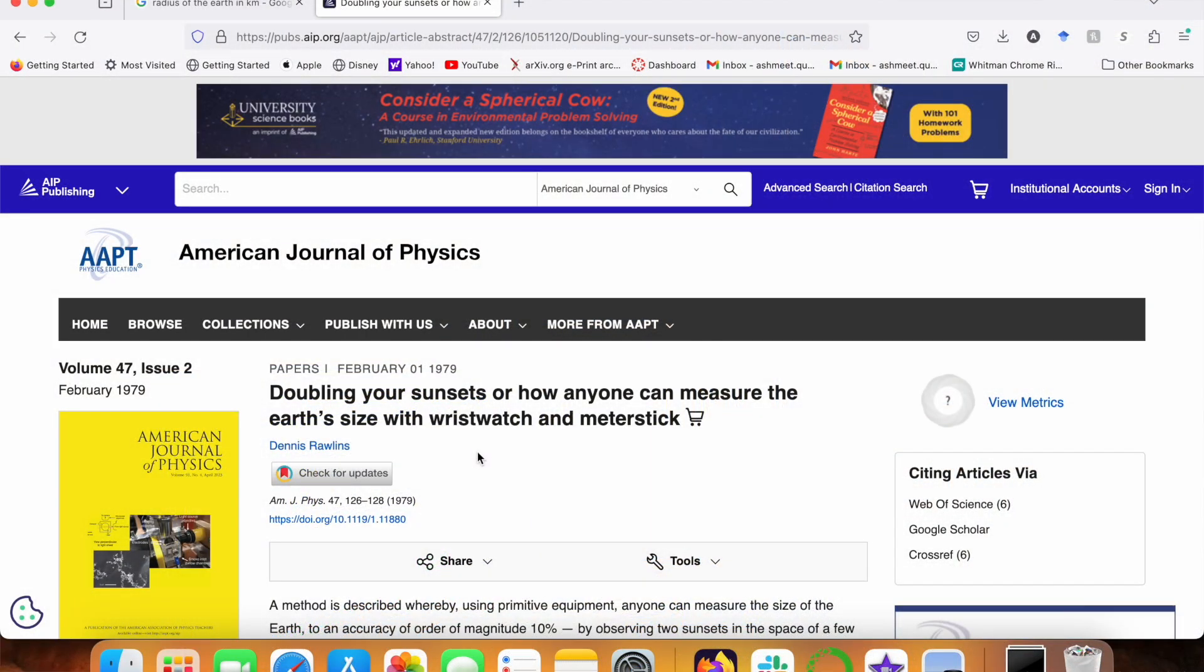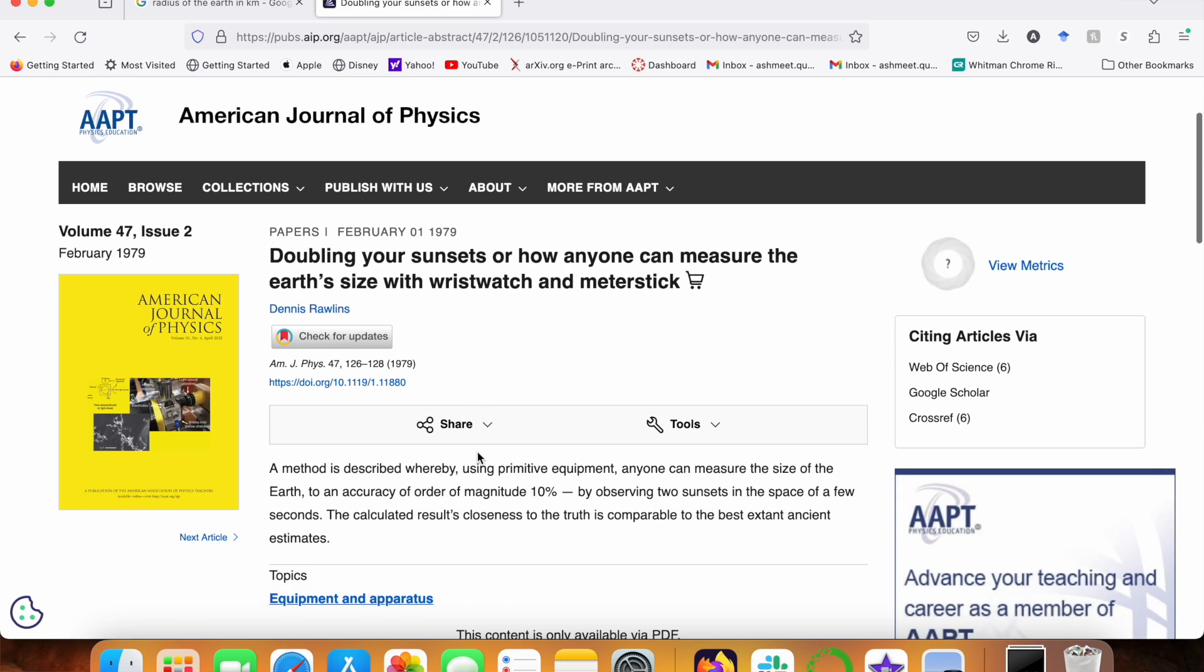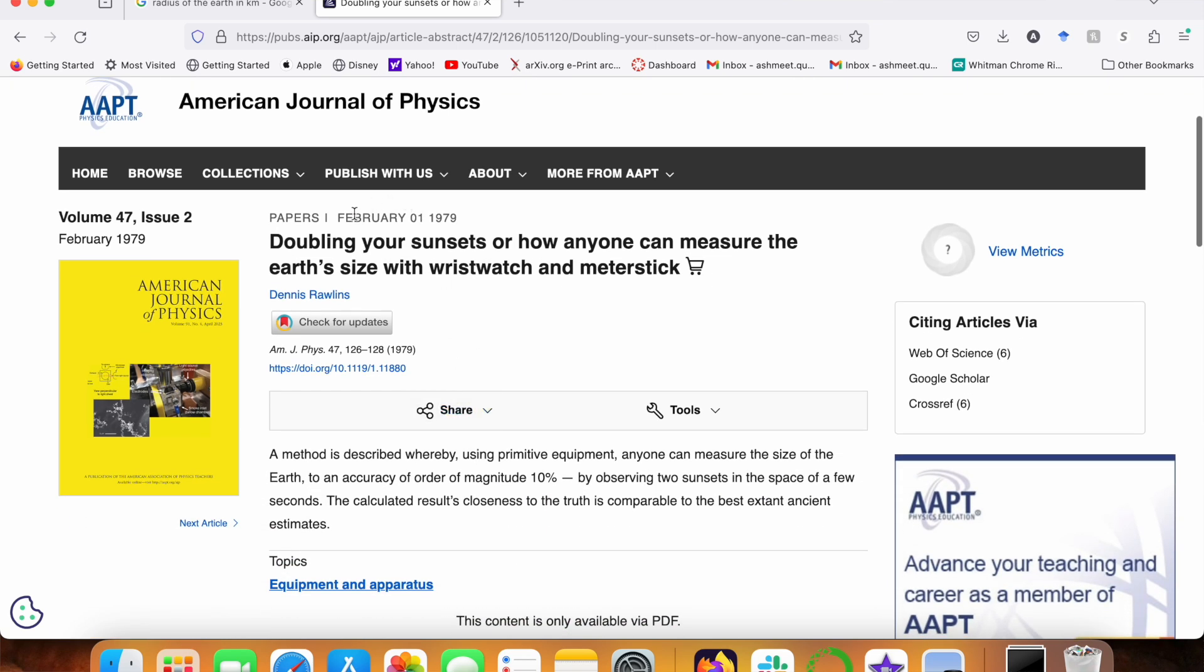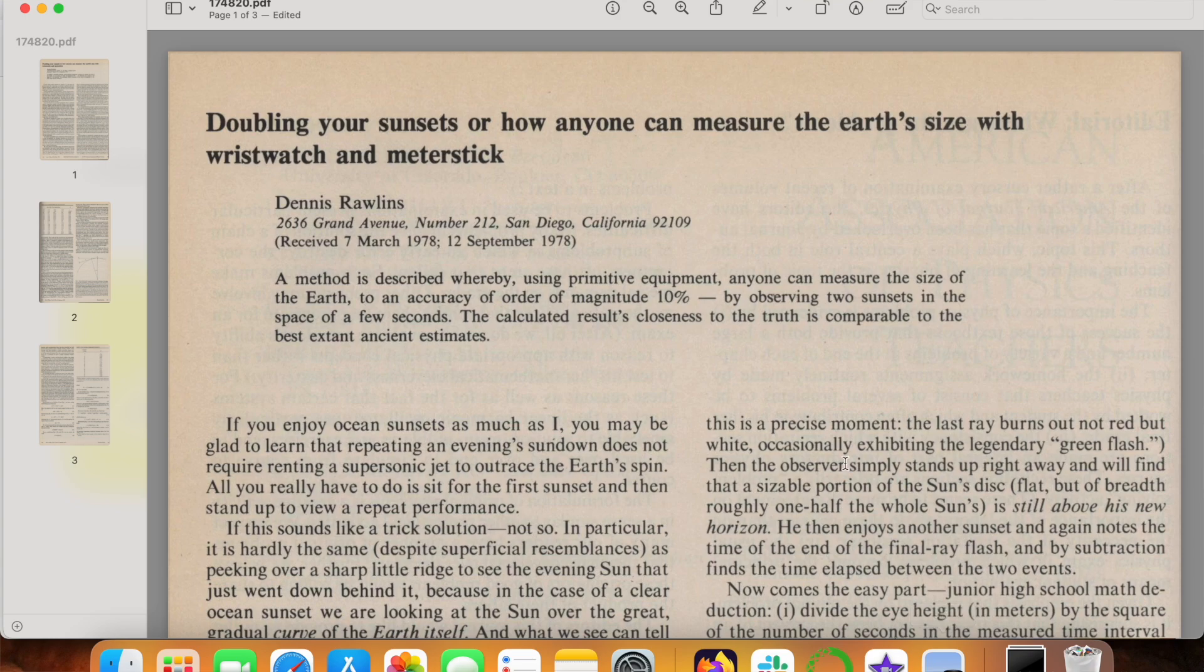This method was first suggested by Dennis Rollins of San Diego, California, who published a 1979 paper in the American Journal of Physics titled, Doubling Your Sunsets, or How Anyone Can Measure the Earth's Size Using a Wristwatch and Meter Stick. Very apt title indeed.